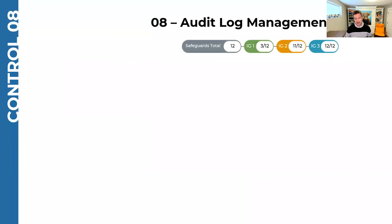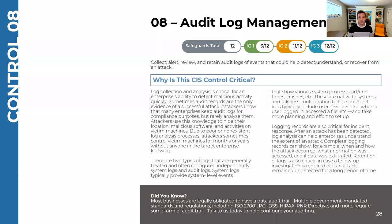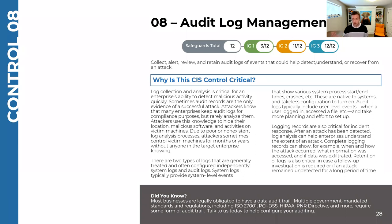Audit log management — most of these safeguards are not in implementation group one. The highlight is about collecting, reviewing, alerting, and retaining logs. The reason it's primarily in groups two and three is that even for a 20-device network, there are a lot of logs: system logs, security logs, application logs, backups, firewalls, network logs — millions and millions of entries. The challenge is finding the pieces of information that are relevant and that will help us identify a risk, mitigate a risk, or recover from something.